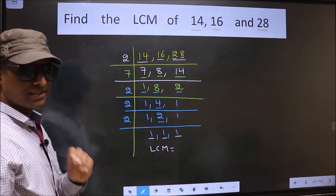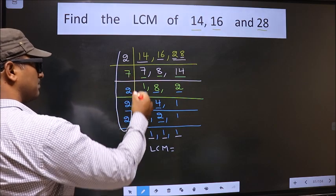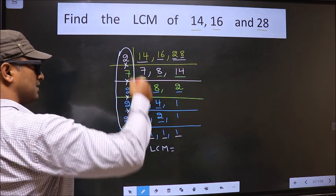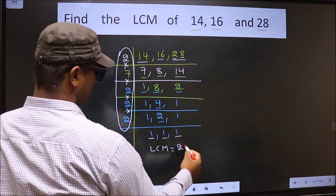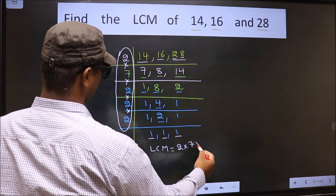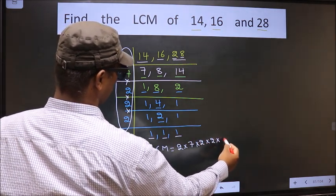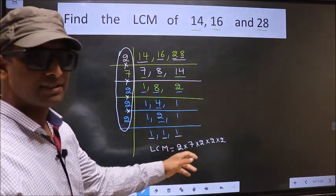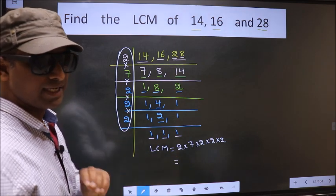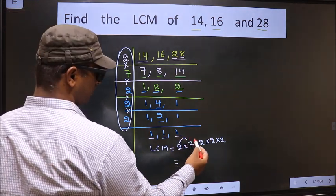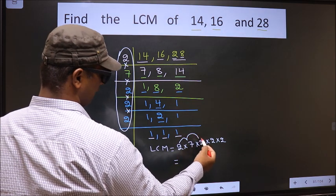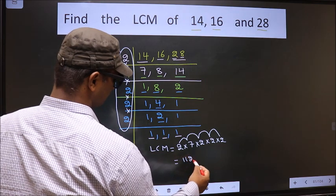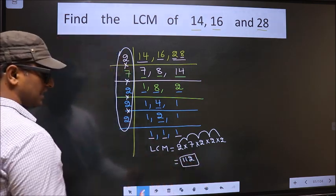So our LCM is the product of these numbers: 2 × 7 × 2 × 2 × 2 × 2. Let us multiply these numbers. That is 2 × 7 = 14, 14 × 2 = 28, 28 × 2 = 56, 56 × 2 = 112. So 112 is our LCM.